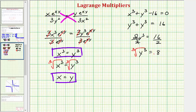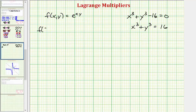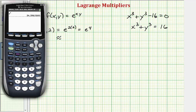Taking the cube root of both sides, the cube root of 8 is 2 since 2 cubed equals 8, so y equals 2. Since x equals y, x also equals 2. This means the max or min value will occur at the point (2, 2). We only found one location, so either the max or min will not exist under the given constraint. Evaluating f(2, 2) gives e raised to the power of 2 times 2, or e to the fourth, which is approximately 54.5982.